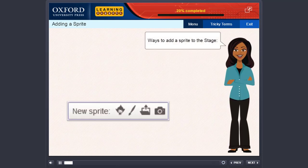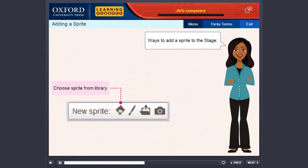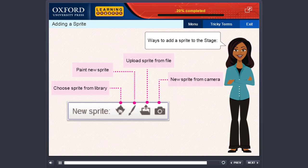Adding a sprite. You can add a sprite to the stage in four ways, such as: Choose sprite from library. Paint new sprite. Upload sprite from file. New sprite from camera.